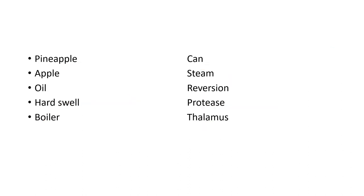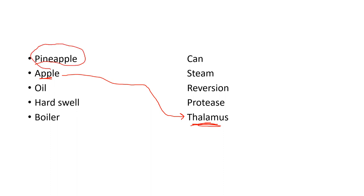Apple is actually formed from the thalamus — the thalamus here refers to a part of the plant organ, not the brain structure. This is an important distinction. Next, pineapple: when you eat pineapple you get a stinging sensation, which is due to a compound containing a protease enzyme.